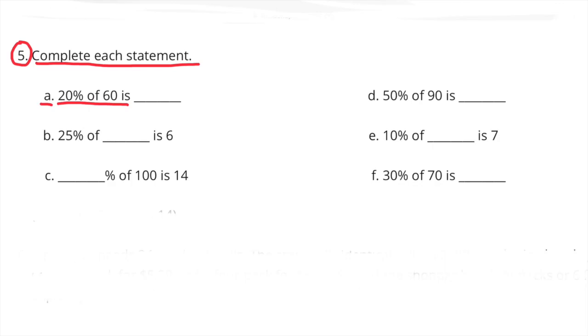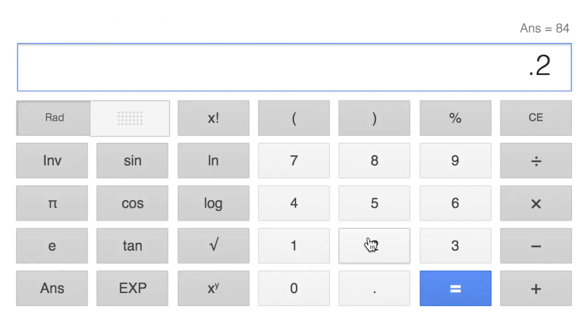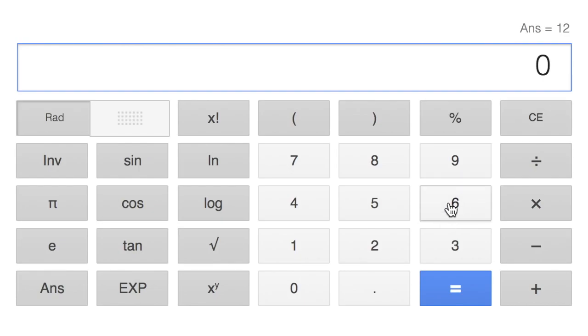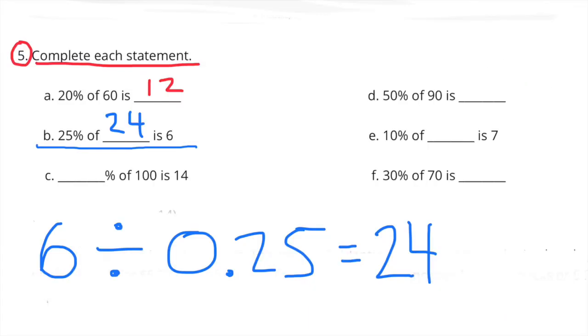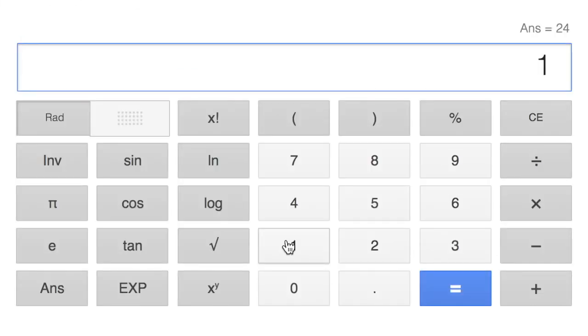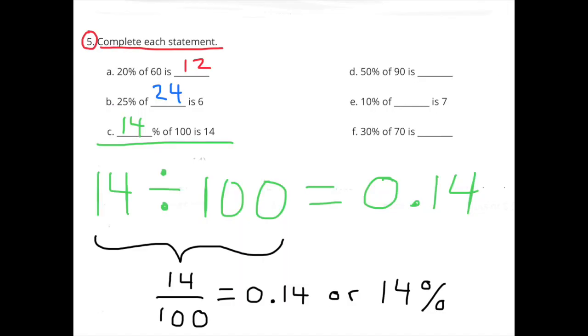Number 5. Complete each statement. Part A. 20% of 60 is 12. 20% times 60 equals 12. Part B. 25% of what number is 6? 6 divided by 25% equals 24. 25% of 24 is 6. Part C. What percent of 100 is 14? 14 divided by 100 equals 14%. 14% of 100 is 14.